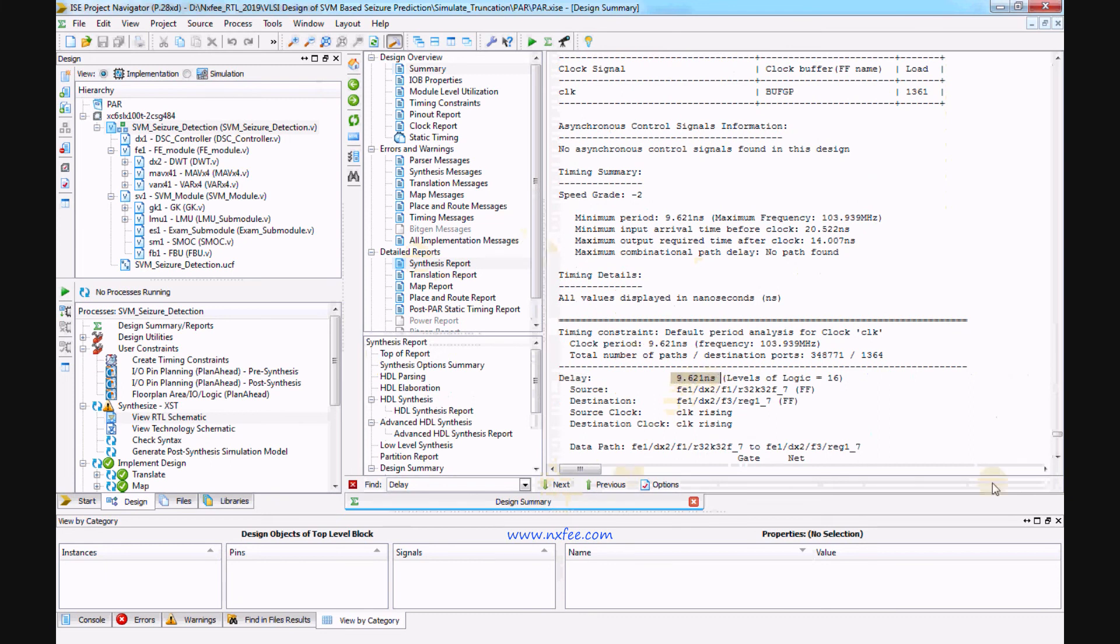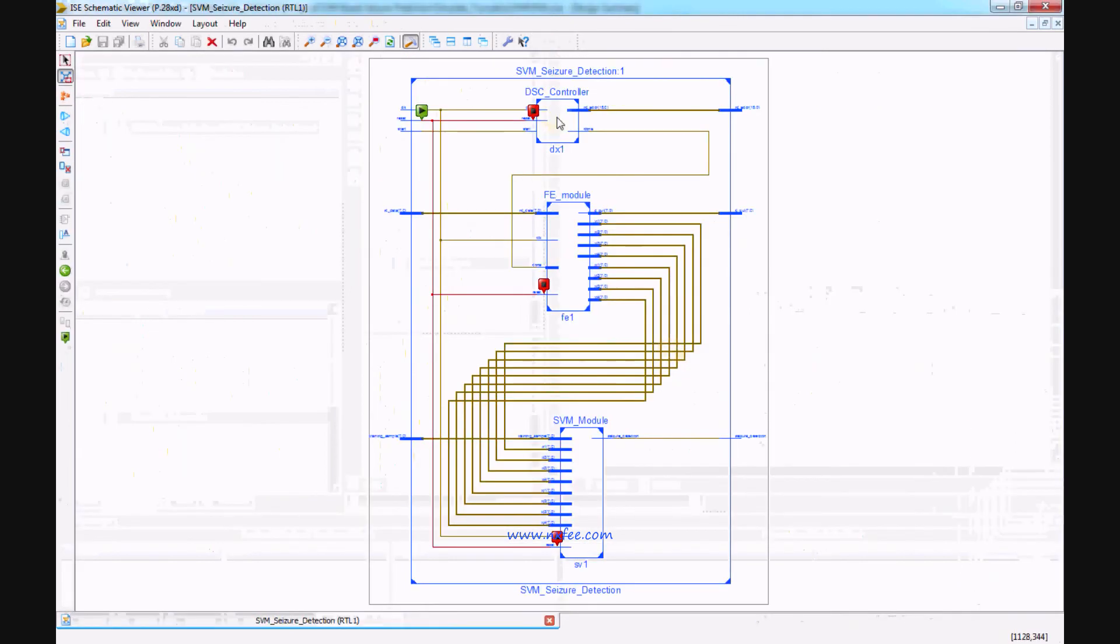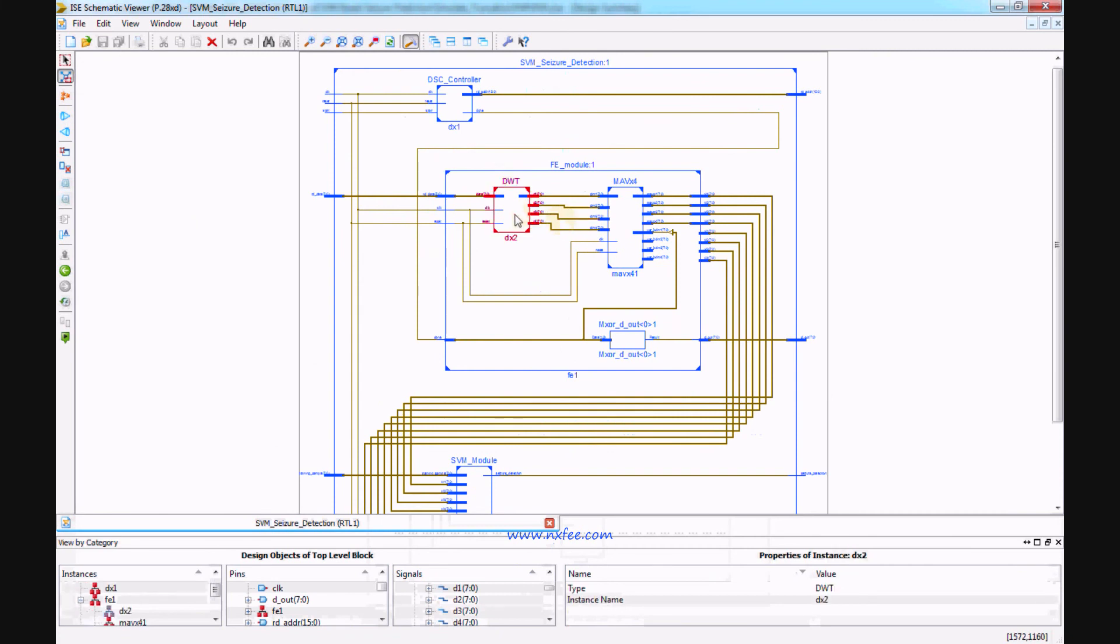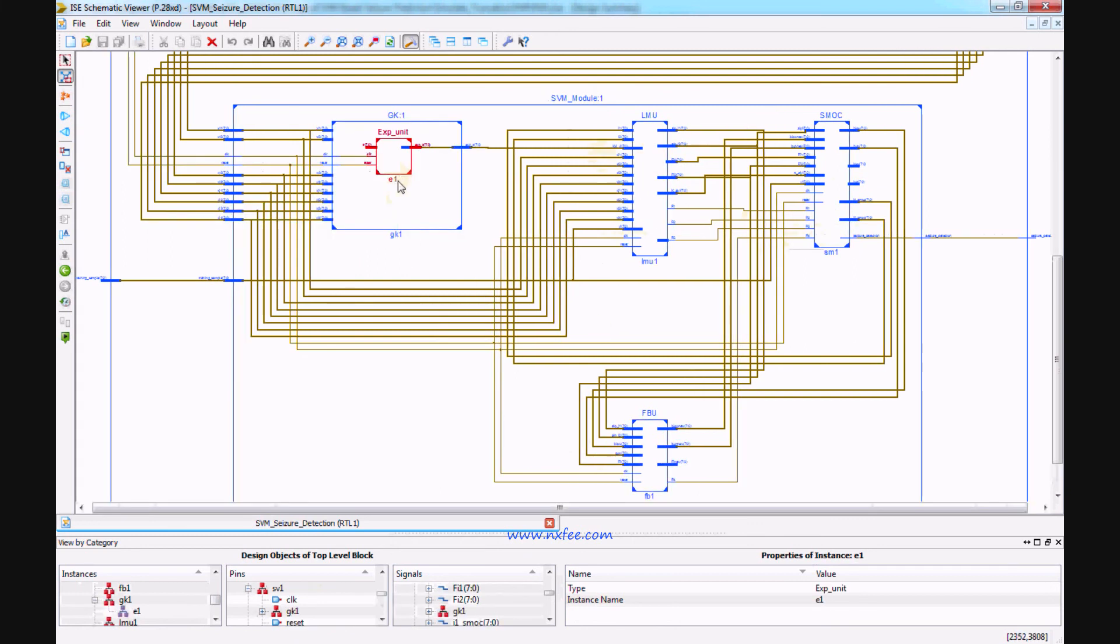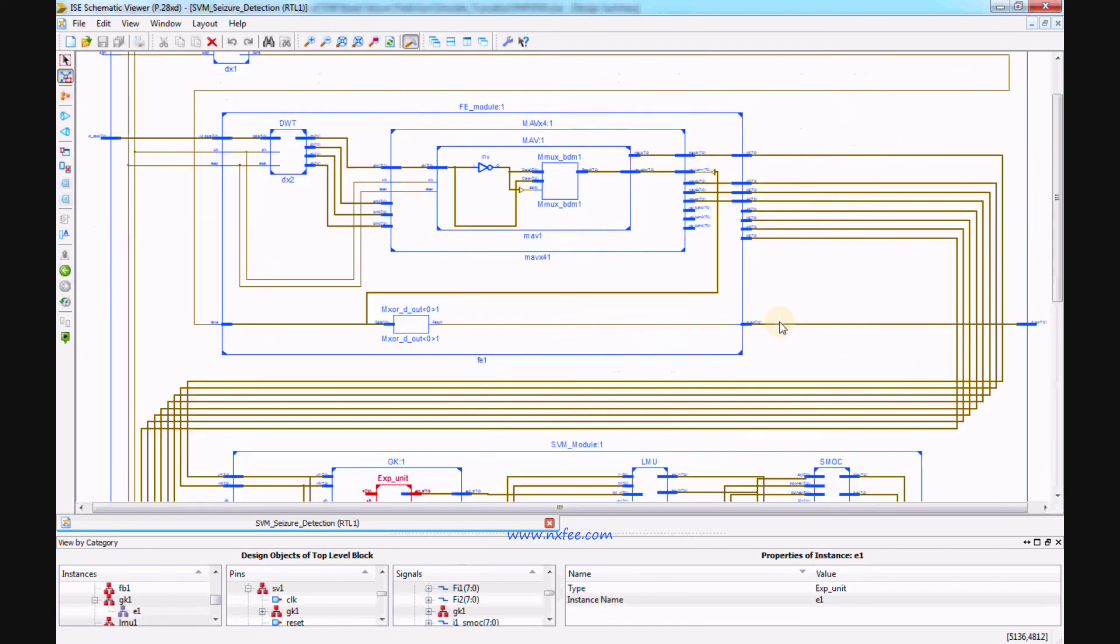The RTL schematic architecture includes DSA controller, FE model, and SVM model. Inside the FE model, there is DWT, MAV, and VAR. This is the architecture of the SVM model: GK, LMU, SMOC, and FBU. The GK has an expansion unit.